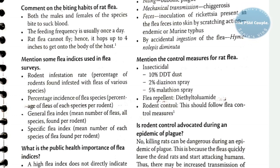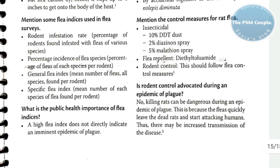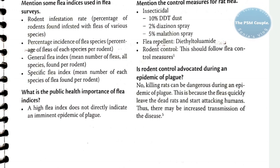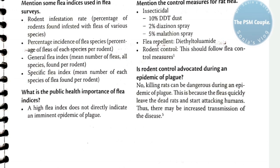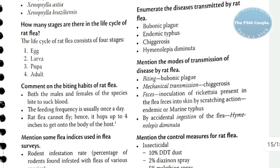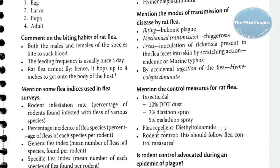Control measures: insecticides used are 10% DDT dust, 2% diazinon spray, and 5% malathion spray. Flea repellent is diethyl toluamide. Regarding rodent control: rodent control should follow flea control measures. During an epidemic of plague, killing rats is dangerous because fleas quickly leave the dead rats and start attacking humans, thus increasing transmission of the disease.